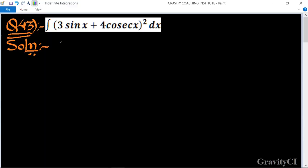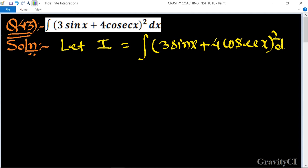Chapter indefinite integrations, question number 43: integration of (3 sin x + 4 cos x) whole square dx. So first we let integration I is equal to integration (3 sin x + 4 cos x) whole square dx. Now we have...